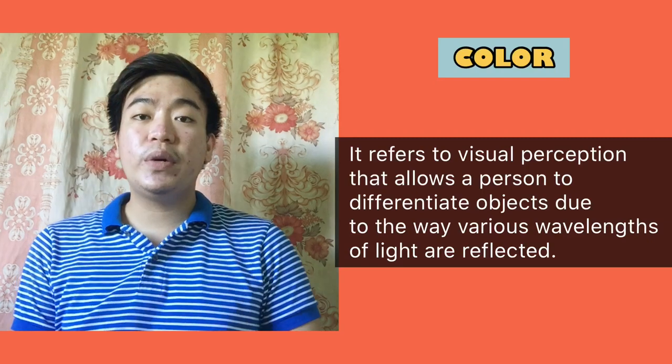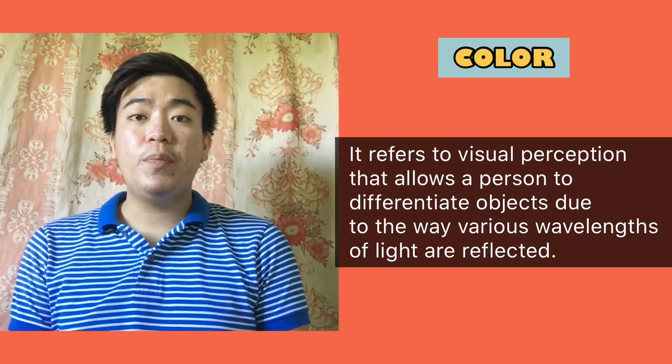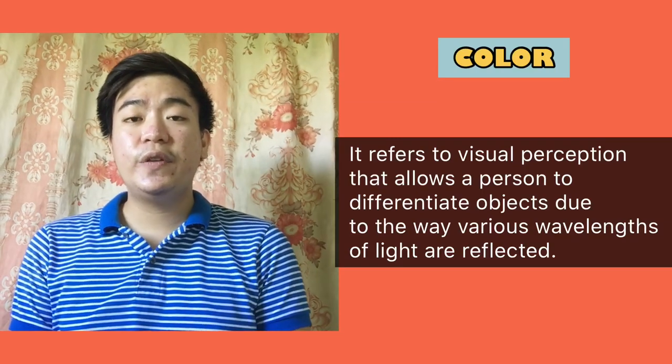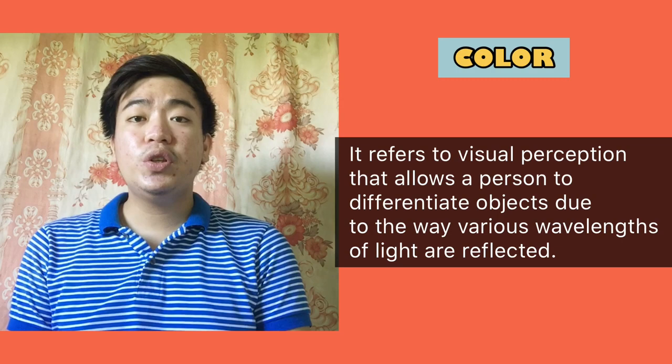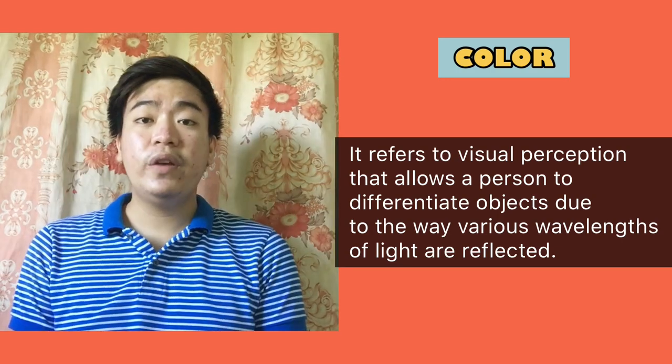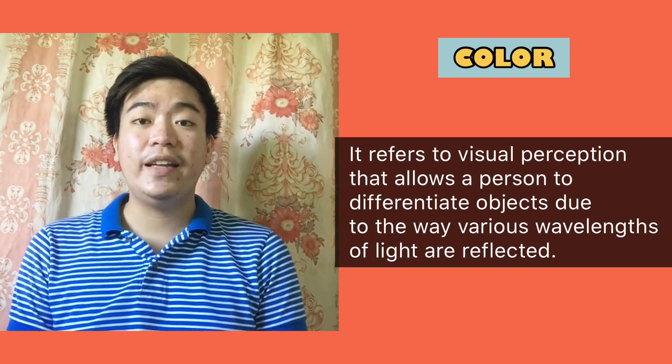The third element is color. Color refers to the visual perception which allows a person to differentiate objects due to the way various wavelengths of light are reflected. Color is important in art because it can communicate information and emotion to the viewer. Color has three properties: hue, value, and saturation.